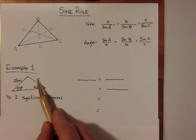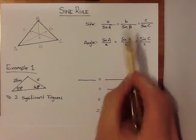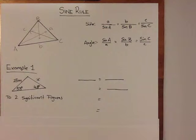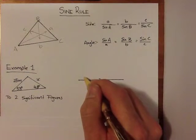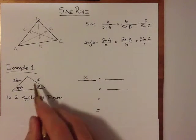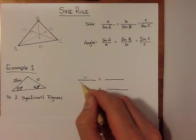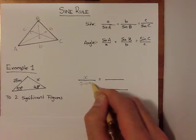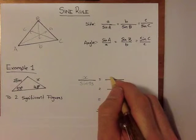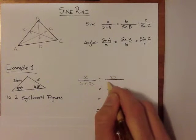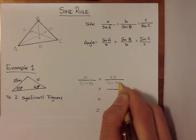Since we're asked to find the unknown side, we're going to use our side rule. Substituting what we know into the formula, we are going to have X over sine 53 is equal to 25 over sine 48.